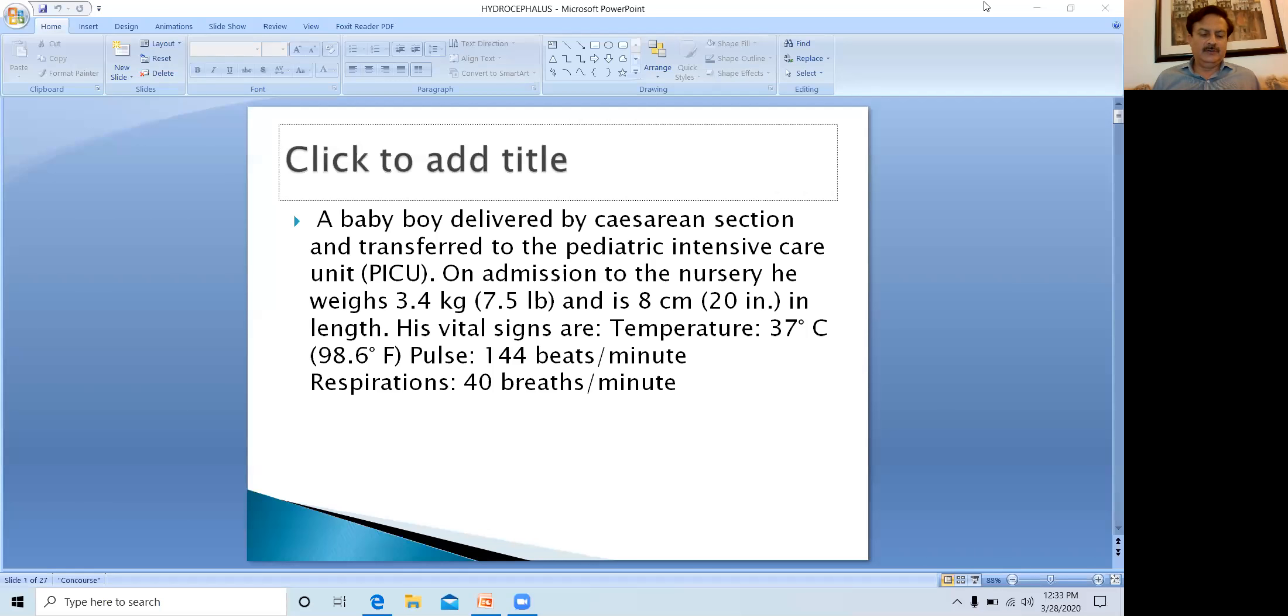Today there is a case of a baby boy who was delivered by caesarean section and was transferred to the pediatric intensive care unit. On admission to the nursery, his weight was 3.4 kg and his length was 8 cm. His vitals were temperature 98.6 degrees Fahrenheit, pulse rate 144 beats per minute, and respiratory rate 40 breaths per minute, which was on the higher side.